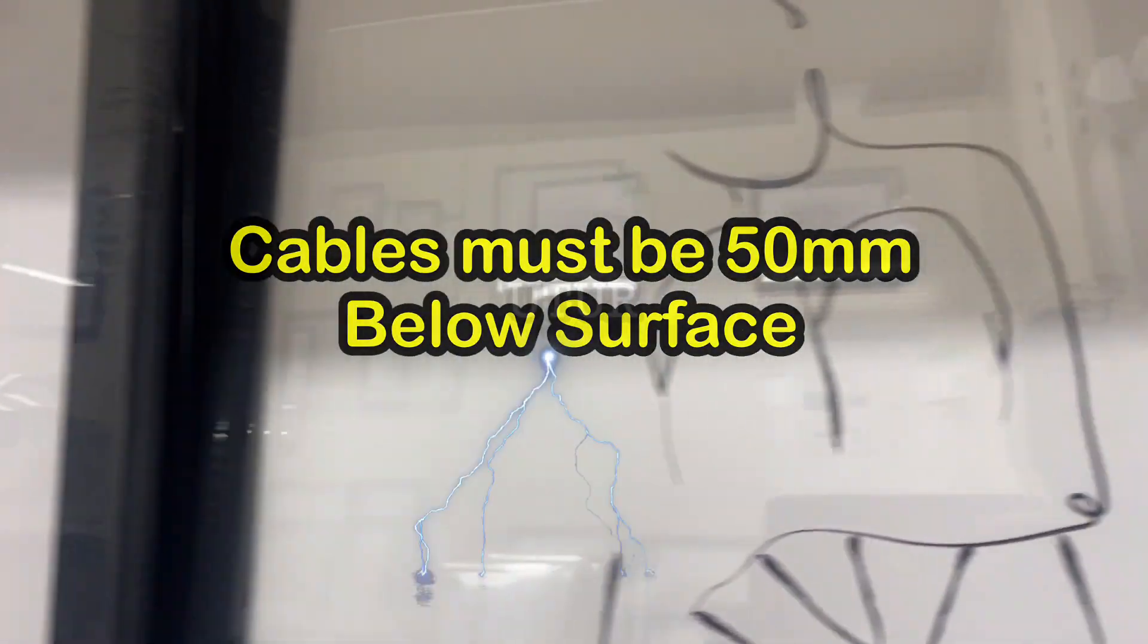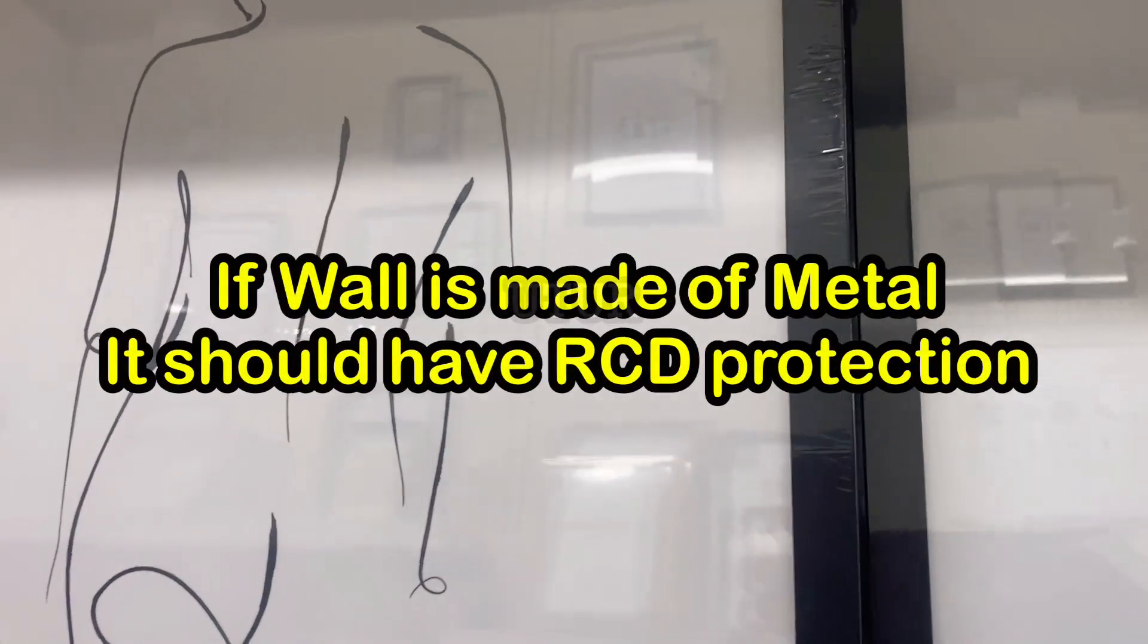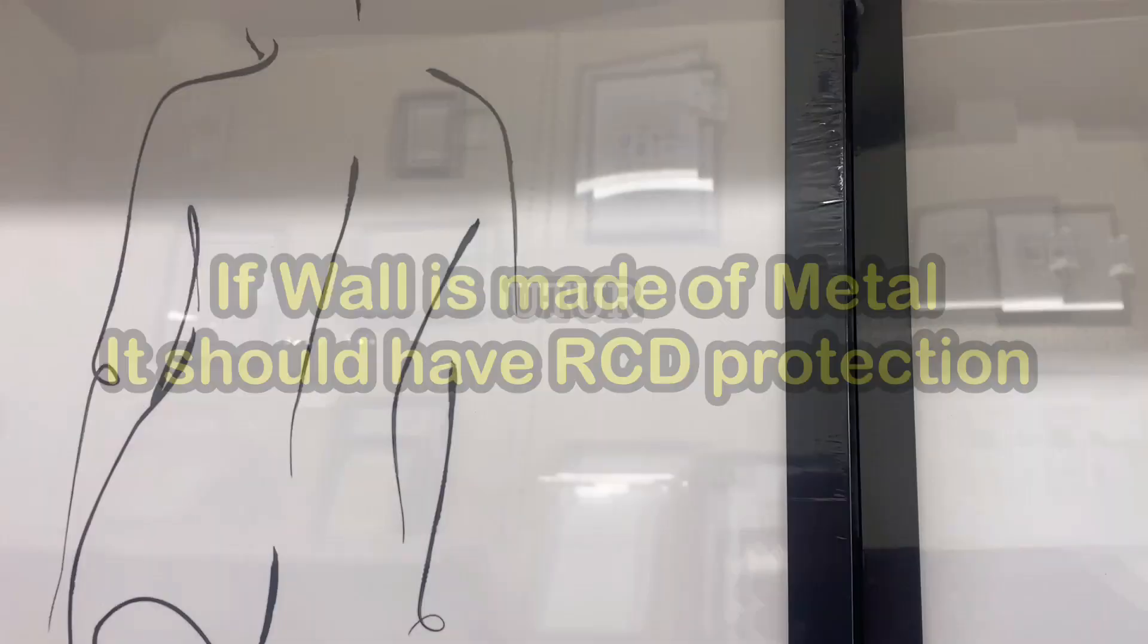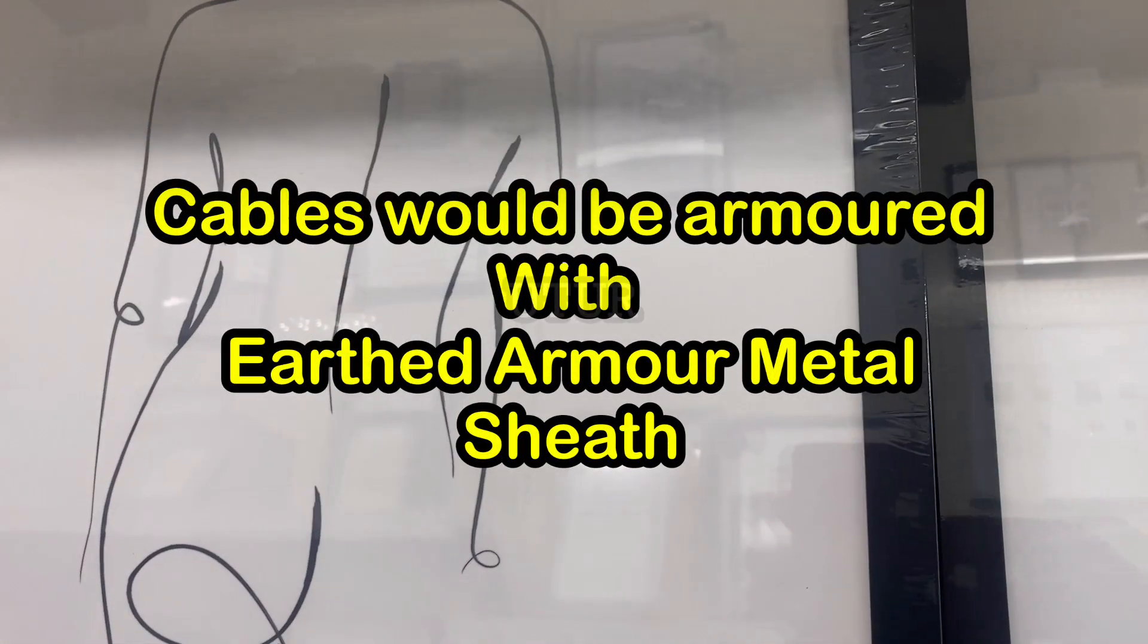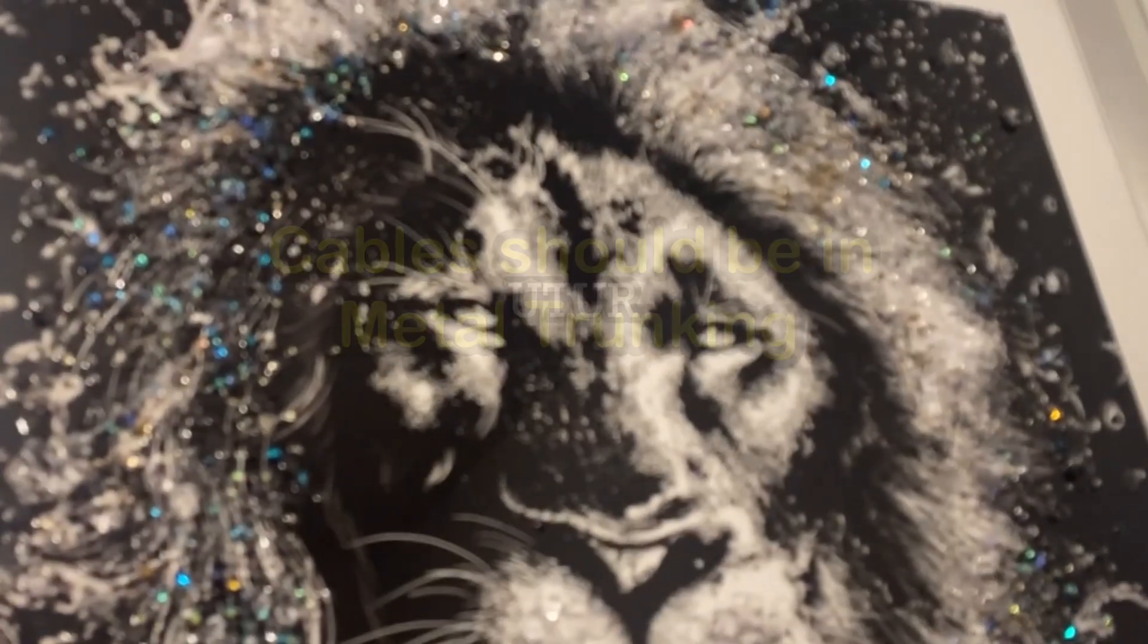If engineers encroach the non-electrical safety zones, wires or cables must be over 50mm below the surface. If the wall is made of metal, it will need RCD protection. The cables would be armoured with an earthed armour or metal sheath, should be in the metal trunking and should have protection from at least 3mm steel.